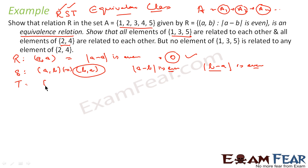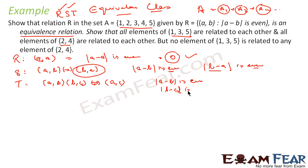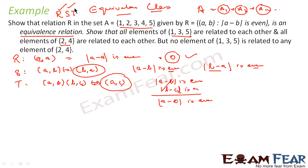Now comes transitive. For transitive, if A comma B is a member and B comma C is a member, this should imply A comma C is a member. That means if A minus B is even and B minus C is even, if you add these two, B will cancel, and I get A minus C mod is even. So A minus C mod is even implies A comma C is a member of this set. This is transitive also. Since this relation is reflexive, symmetric, and transitive, it is an equivalence relation.